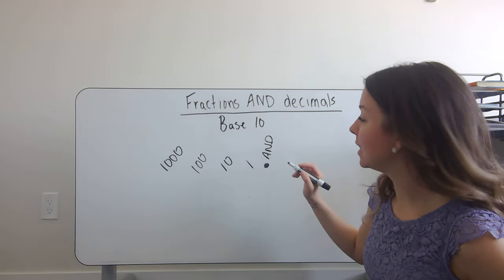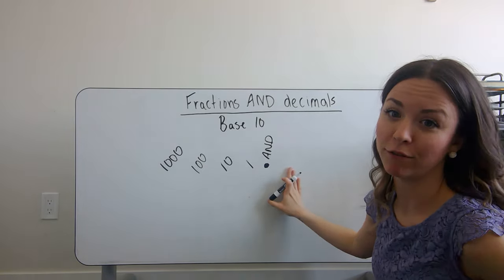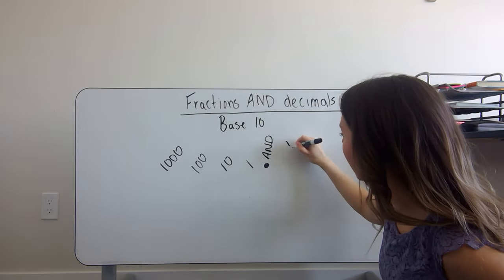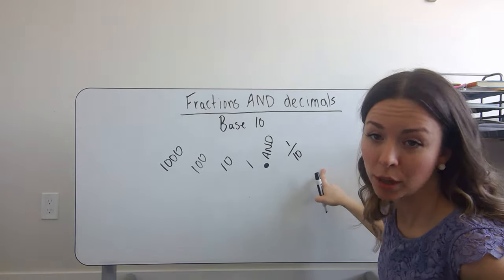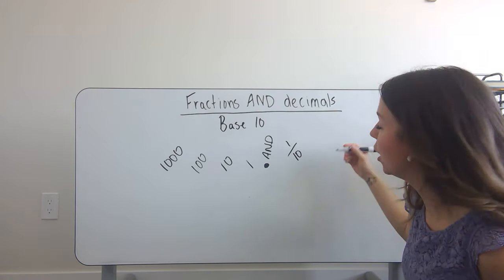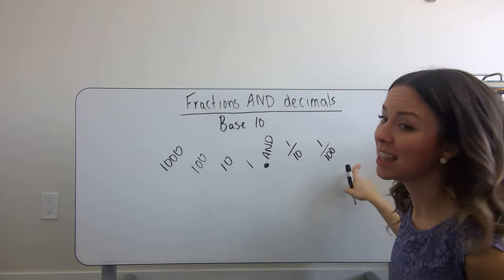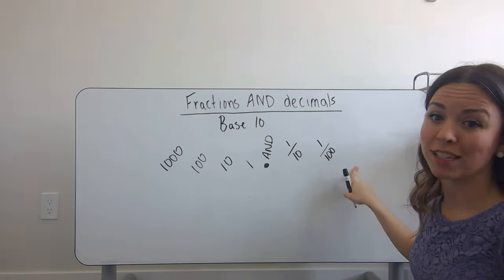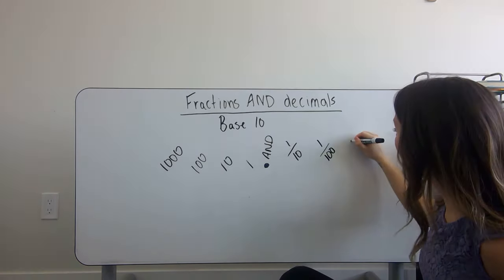For example, one tenth is the first place value after our decimal place, which is one over ten. One hundredth is the second place value after the decimal, which is one over one hundred. The third place value after the decimal is the thousandths place, which is one over one thousand.